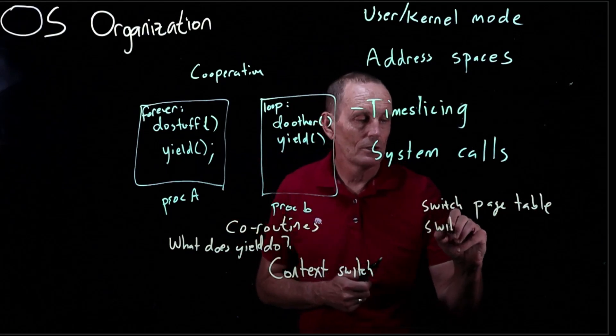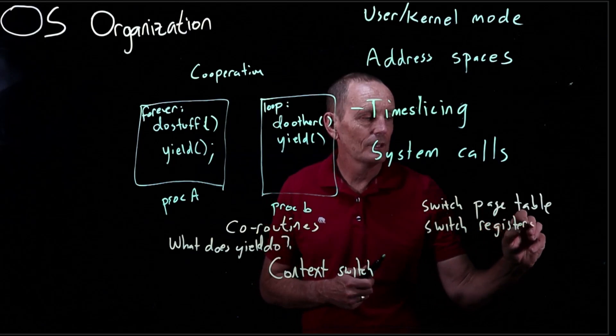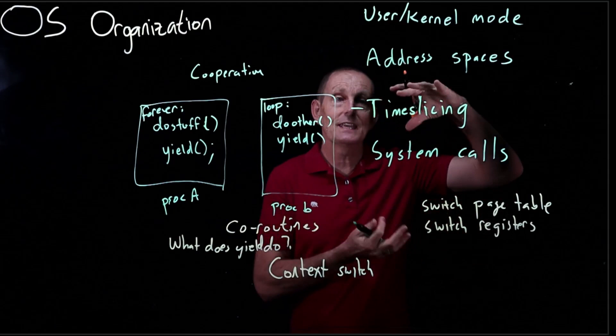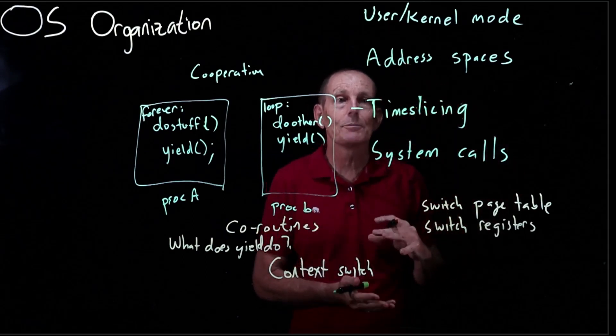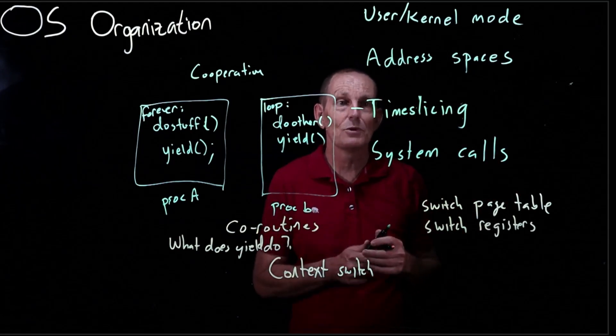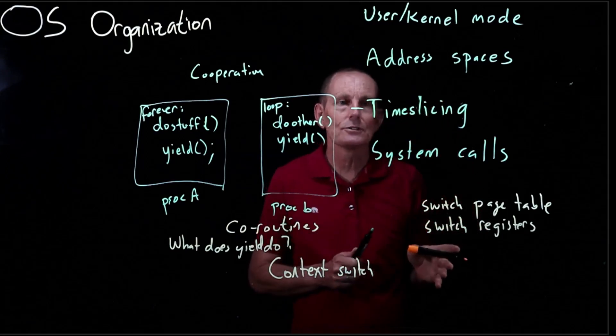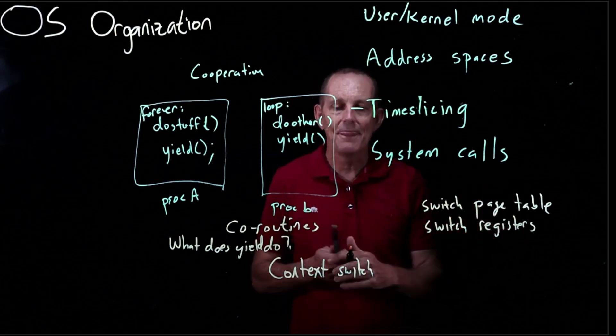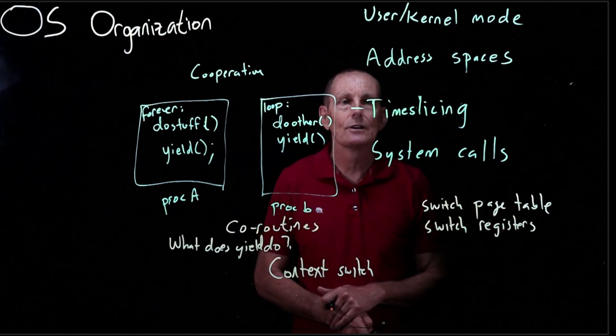We're going to switch really all we need to switch are the registers. Because if you think about it the state of a process is the state of its memory plus the state of any information the kernel kept on its behalf plus what else? I mean as it's running everything's either in memory or in the kernel's memory or it's in the registers. So all we need to do is really switch the registers and the page table and that gives us a context switch. That's enough to start executing another program.